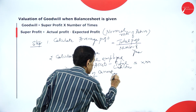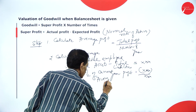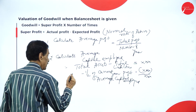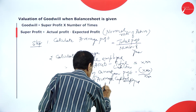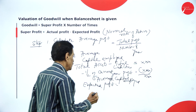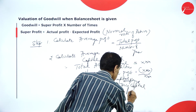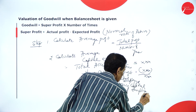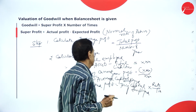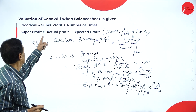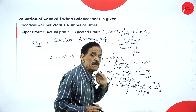This is important: calculate average capital employed, then calculate expected profit using the normal rate of return. Expected profit equals average capital employed multiplied by rate divided by 100. Then super profit equals actual profit minus expected profit. First, calculate the average profit — total profit divided by number of years to get the actual average profit.